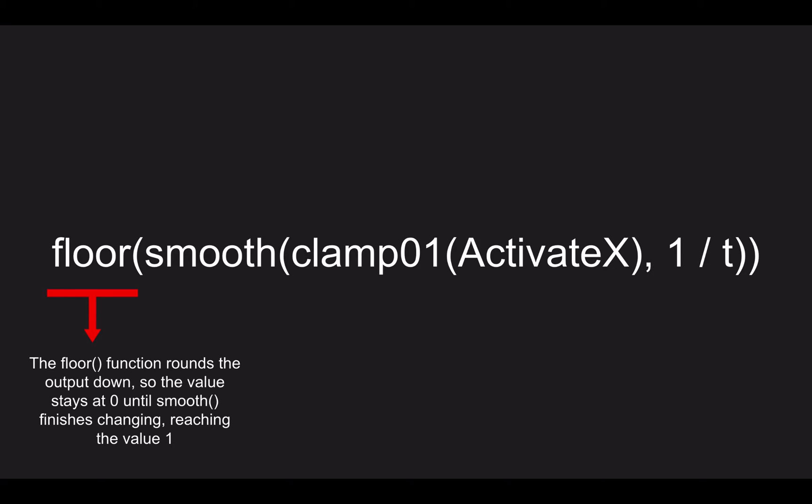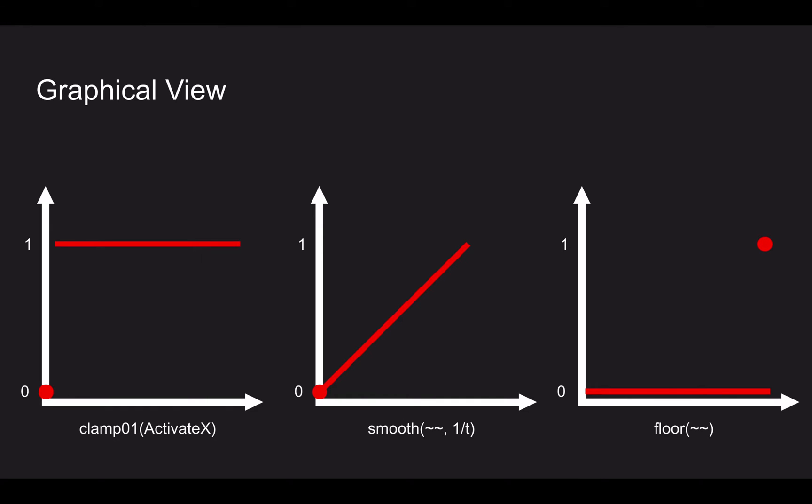In a graphical perspective, this is how we should look at it. The innermost portion here on the left, the clamp01(activateX), is going to start at zero. When you press it, it's immediately going to jump to one. Next we have a smooth around that, and smooth is not going to let it jump instantly from zero to one but instead let it go smoothly, at a linear rate of one over t units per second.